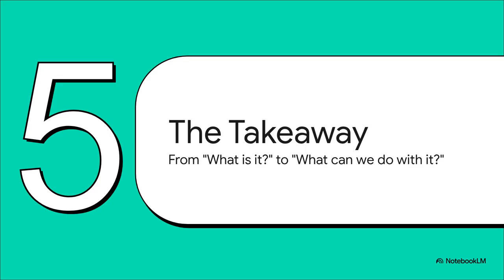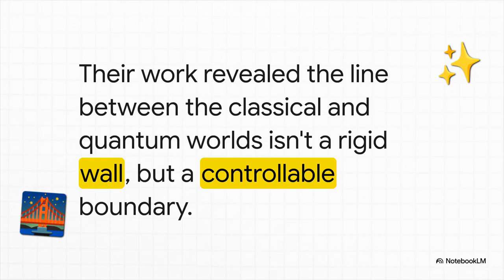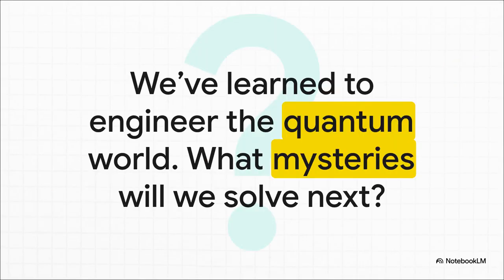So when you boil it all down, what's the ultimate takeaway here? This Nobel Prize, it really represents a fundamental shift in our relationship with the quantum world. It's a shift from just asking, what is it? To finally, for the first time, being able to ask, what can we build with it? You know, before this work, that line between our big, predictable, classical world and the weird, tiny quantum world, it seemed like a rigid, uncrossable wall. What Clark, Devoret, and Martinis proved is that it's not a wall at all. It's a controllable boundary. They showed us that with enough care and enough ingenuity, we can reach across that divide and start engineering with the rules on the other side.